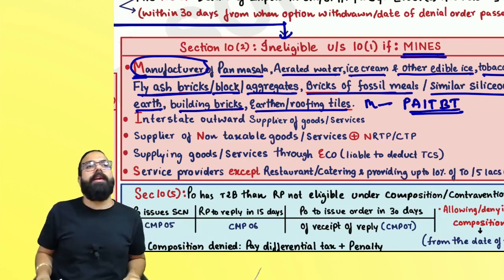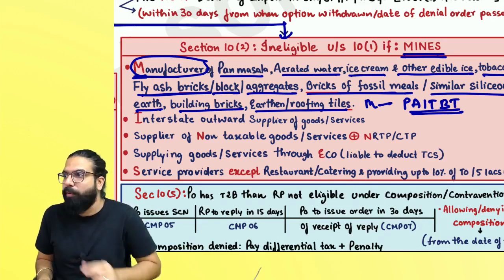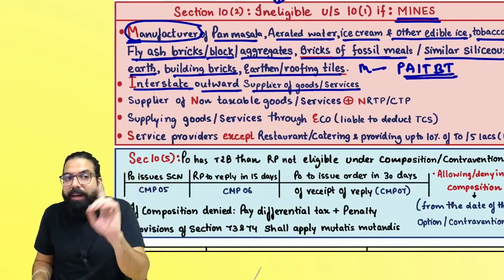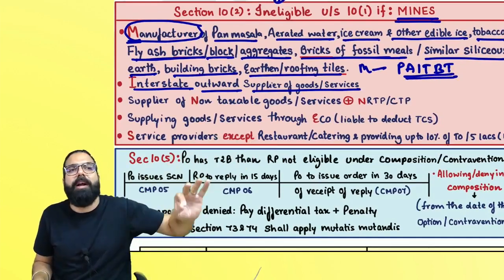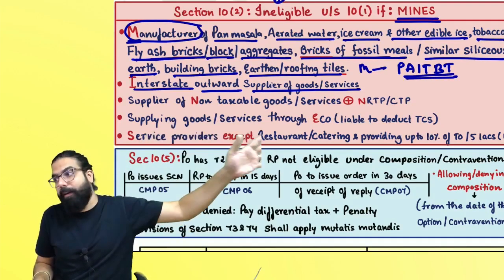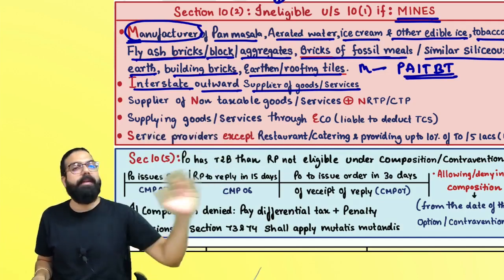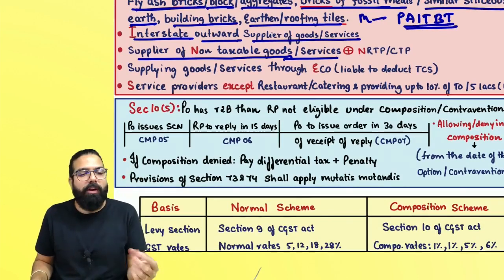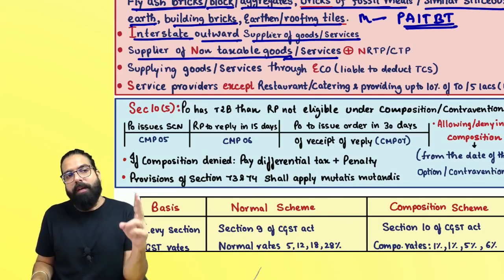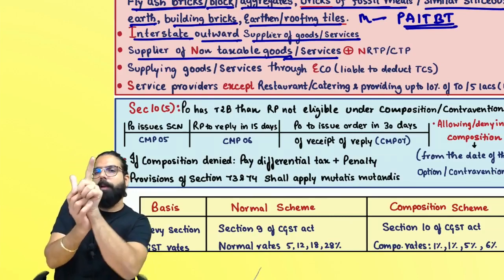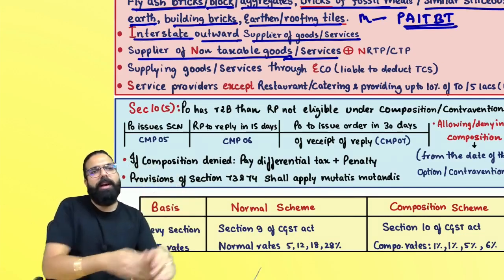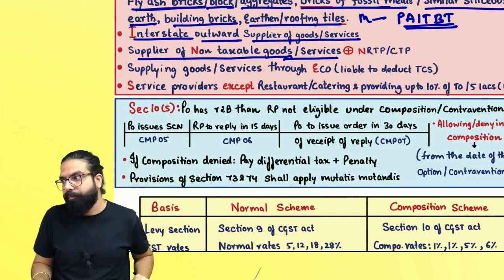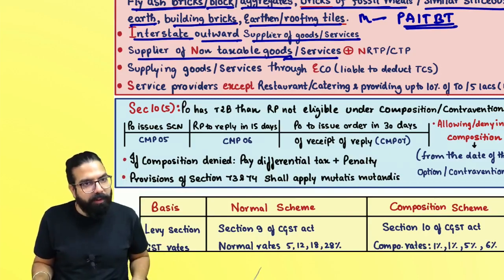I for Interstate outward supplier of goods or service — you will become ineligible. Outward supply to other states is not allowed, but buying from other states is okay. N for Non-taxable goods supplier — if you are supplying non-taxable goods, meaning HP MAN: High Speed Diesel, Petroleum Crude, Motor Spirit, Aviation Turbine Fuel, Natural Gas — or alcoholic liquor for human consumption — you will become ineligible for composition scheme.